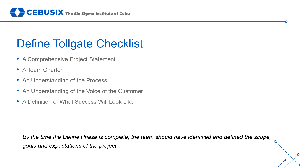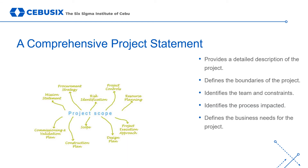By the time the defined phase is complete, the team should have identified and defined the scope, goals, and expectations of the project. The defined tollgate checklist includes all of the mandatory steps to ensuring that you have completed the phase, such as the creation of a comprehensive project statement, the development of a team charter, an understanding of the process being improved as well as the voice of the customer, and a definition of what success will look like. In order to create a strong problem statement, we need to declare where and when the problem was recorded, what the measurement of the magnitude for the problem was — preferably with some tied to cost — and a brief description of the problem understandable by professionals not closely aligned with the process.